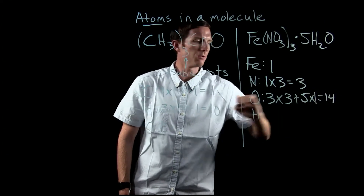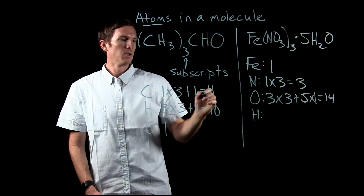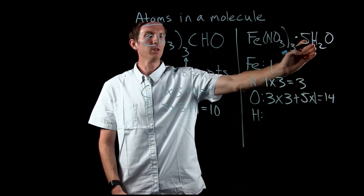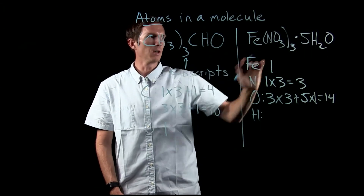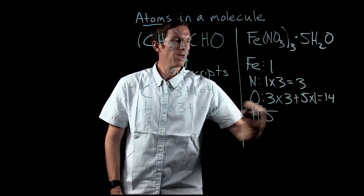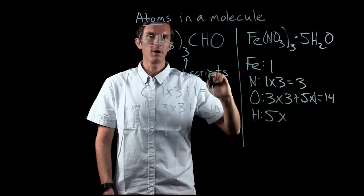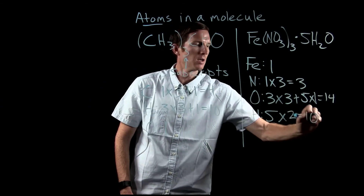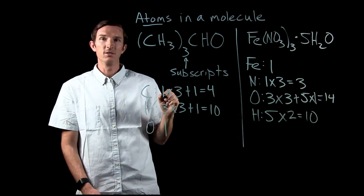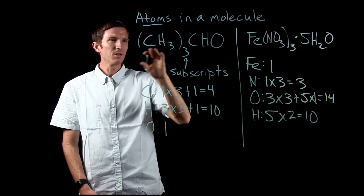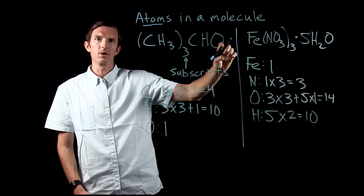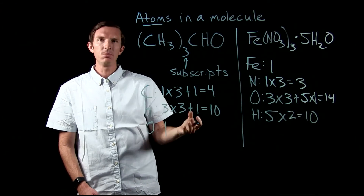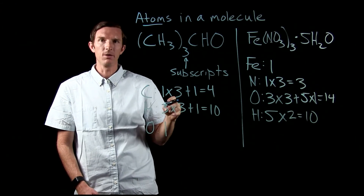For hydrogen, it's only present in the water molecule portion of our hydrate. We have five water molecules and each water molecule has two hydrogens, so that gives us ten hydrogen atoms. We can now look at an individual molecule and determine how many of each type of atom it contains.